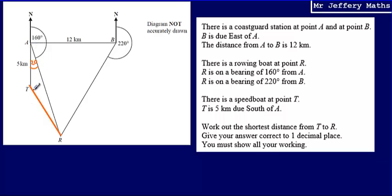If I look at triangle TAR, I would need one more piece of information — either a length or an angle — to use the cosine rule or the sine rule. It's very difficult to find any other piece of information directly: I don't know the bearing from T to R, the angle TRA, or the length AR. So I need to find another piece of information using the second triangle attached to triangle TAR.